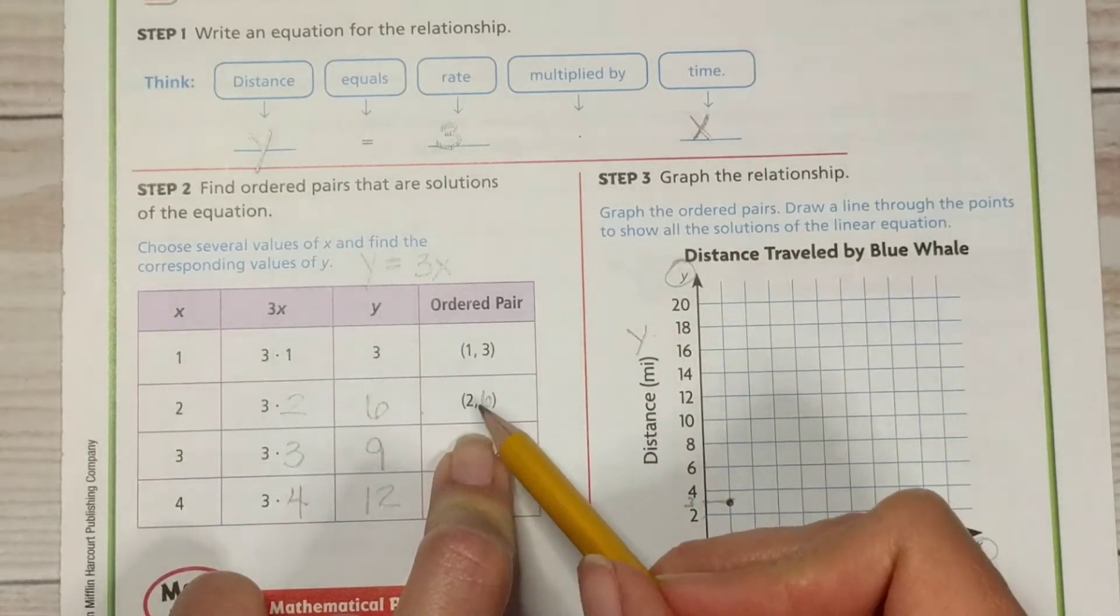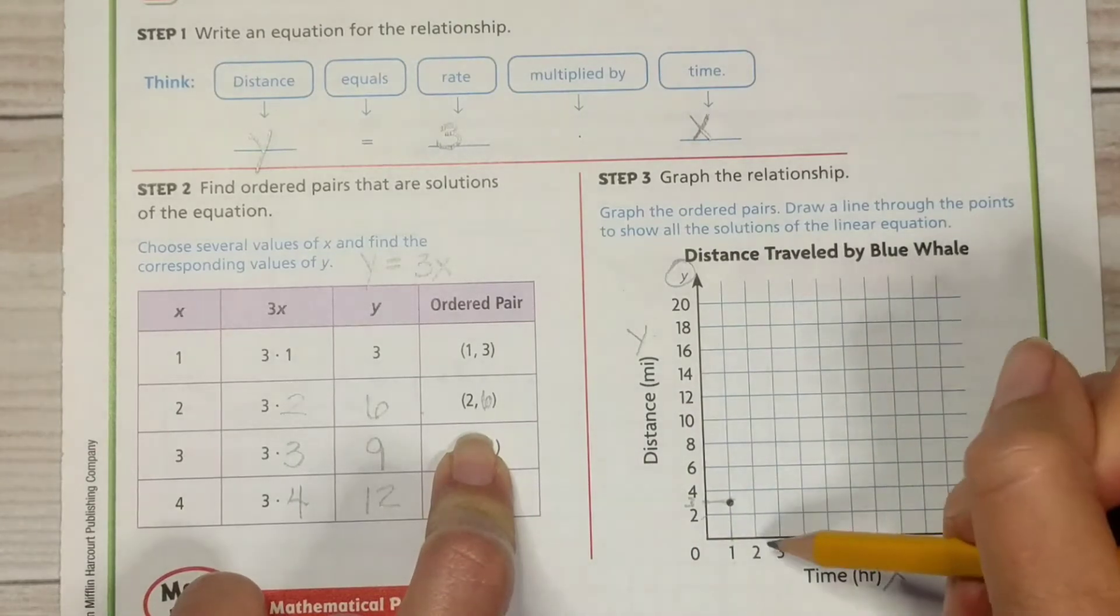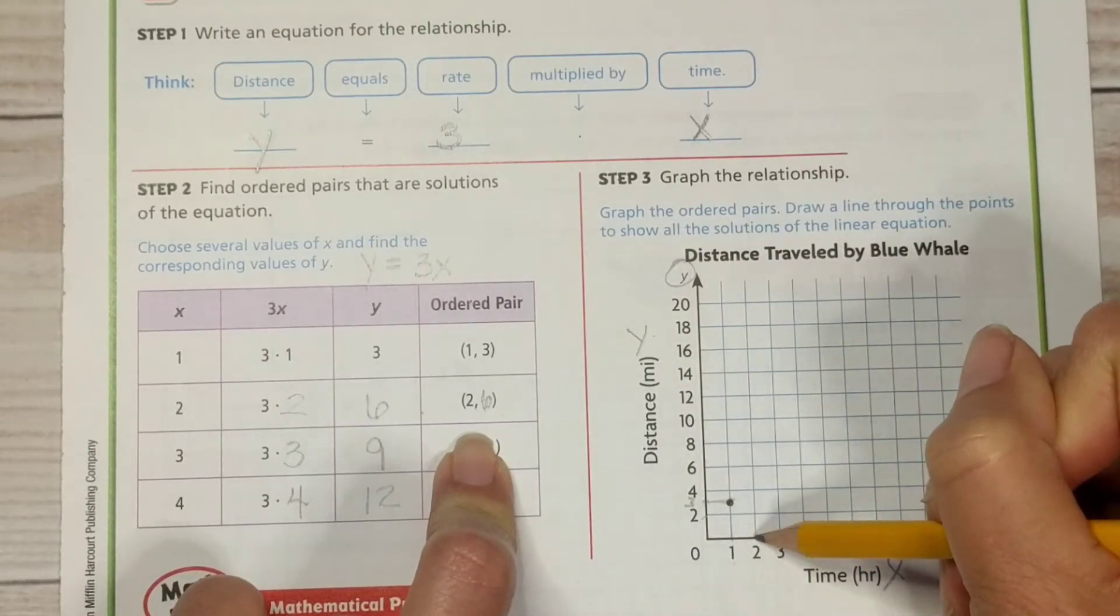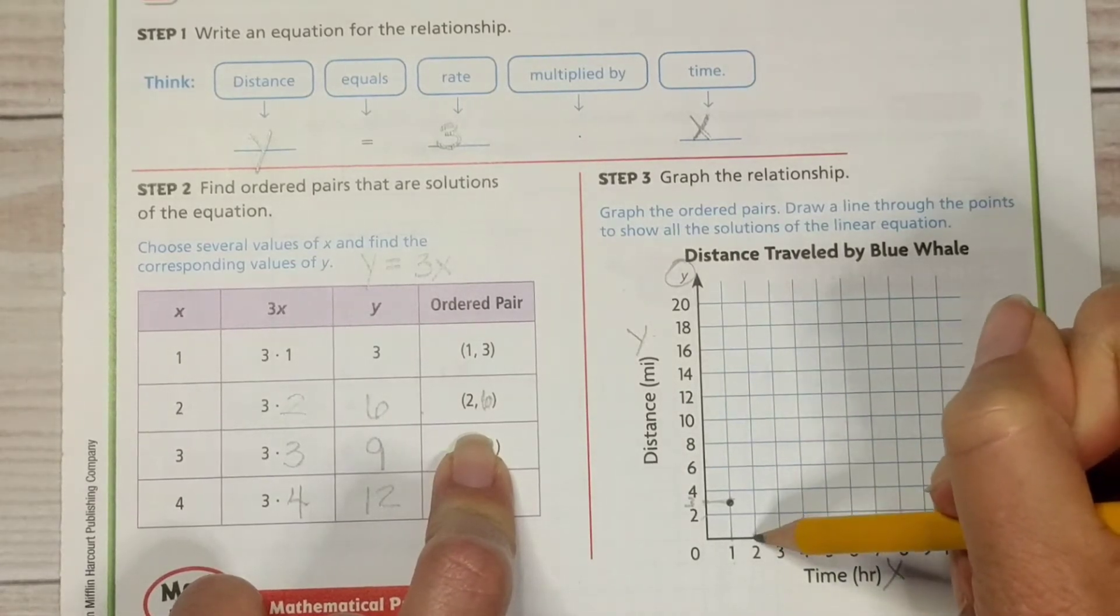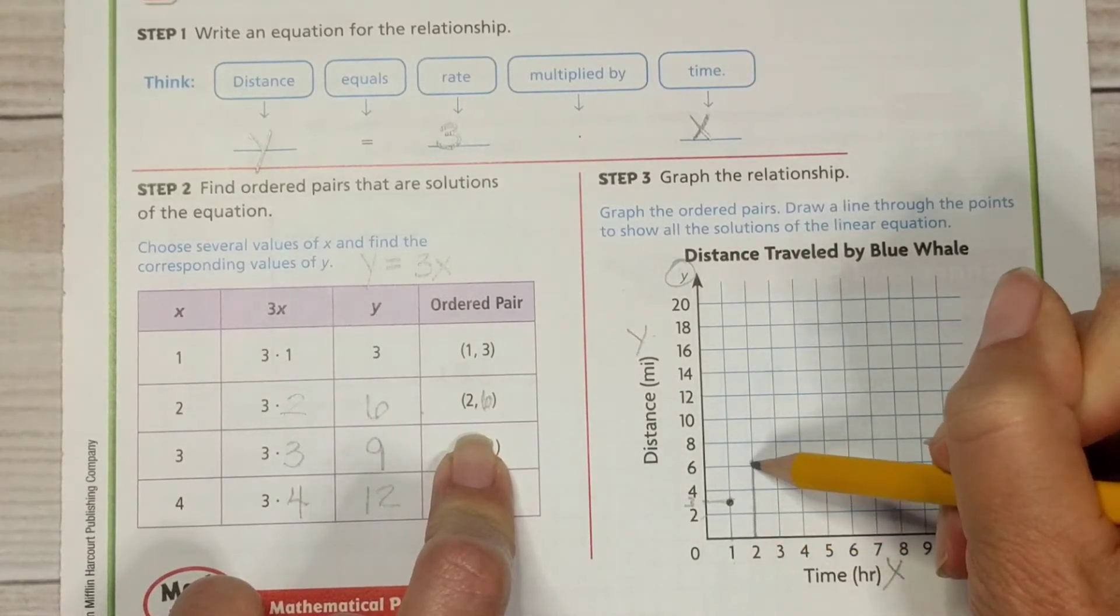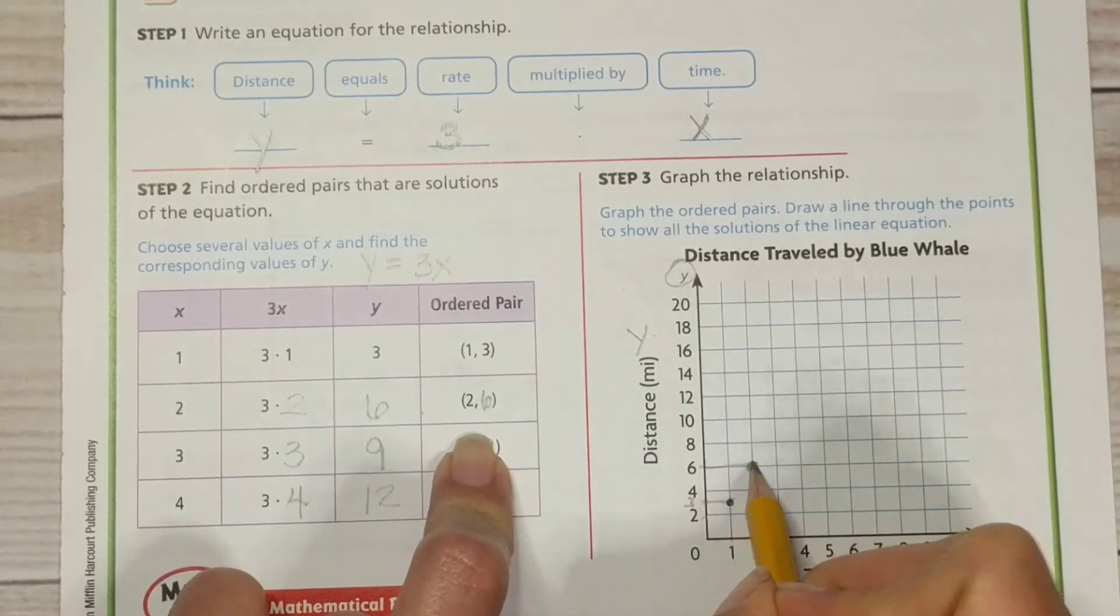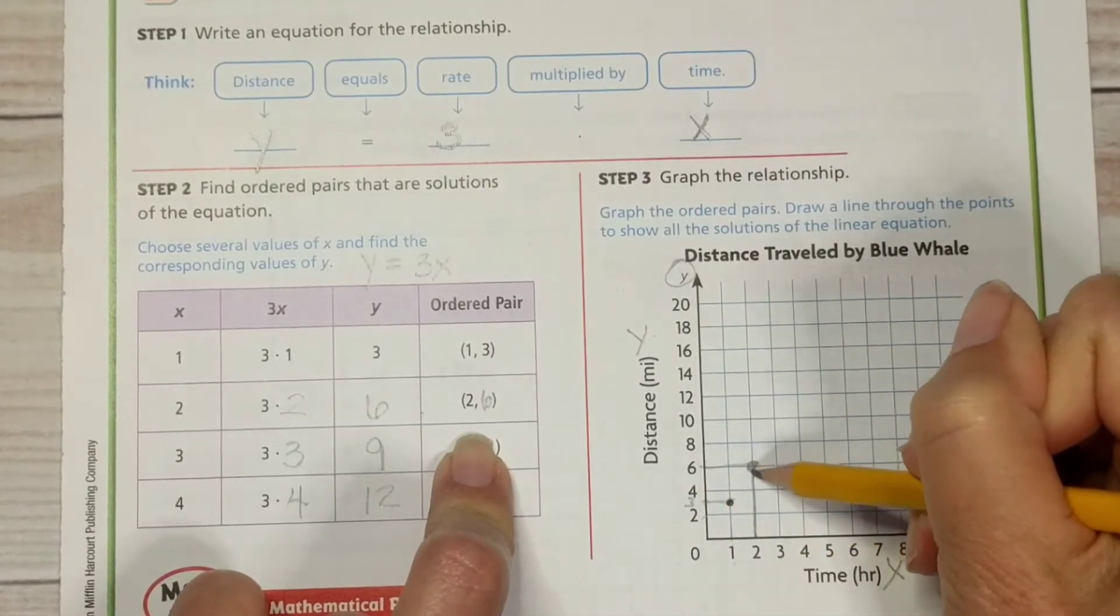Okay, so now we have 2, 6. So 2 is our x value. We always start with our x value. Go up to 6 right there and put another dot. That's where the 2 and the 6 intersect is right there.